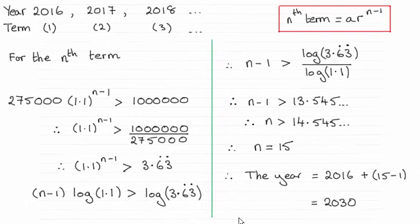Hi there. So as you can see, the first year that the profits exceeded one million pounds was 2030. So I'll show you how we go about this.